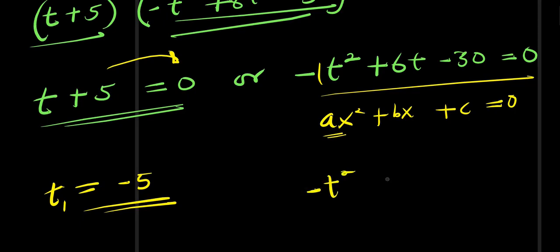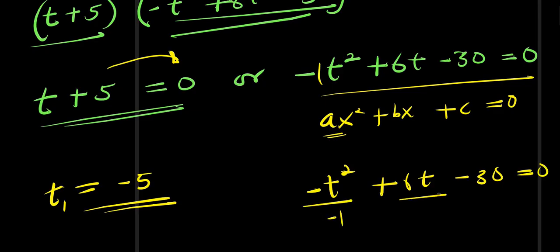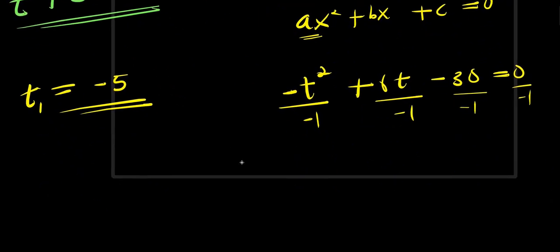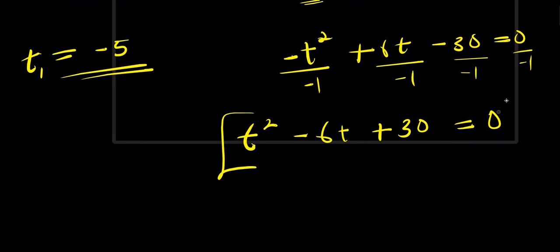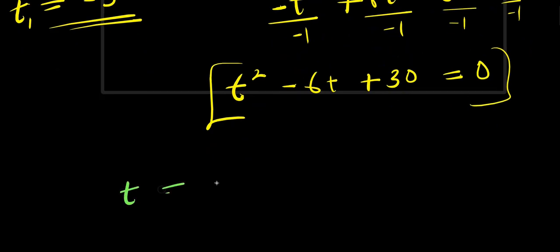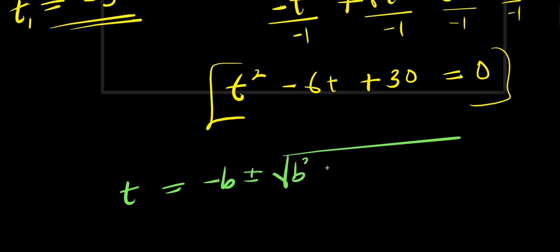We solve this quadratic equation using the quadratic formula. Written in terms of t, the formula is t equals negative b plus or minus the square root of b² minus 4ac, all divided by 2a. The coefficient of t² is a equals 1, b equals negative 6, and c equals 30. Substituting: t equals negative times negative 6, plus or minus the square root of (negative 6)² minus 4 times 1 times 30, divided by 2 times 1.